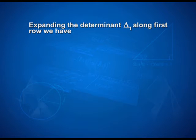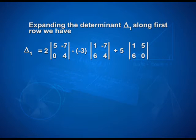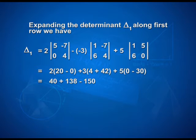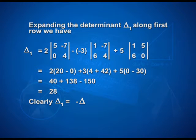Expanding determinant 1 along the first row, we have: 2·det([5, -7; 0, 4]) - (-3)·det([1, -7; 6, 4]) + 5·det([1, 5; 6, 0]). On solving, we have 2·(20-0) + 3·(4+42) + 5·(0-30). On calculations, we get 40 + 138 - 150, equal to 28. Clearly, determinant 1 is equal to the negative of the previous determinant. Hence, property 2 is verified.